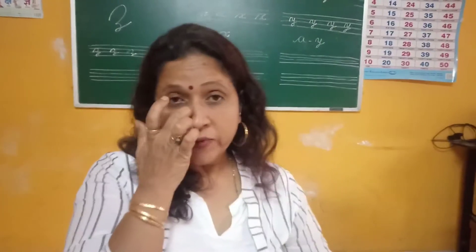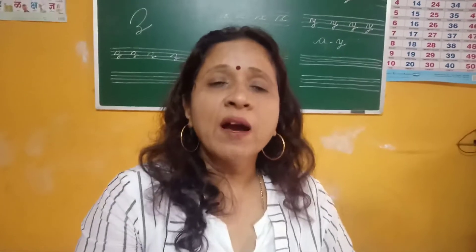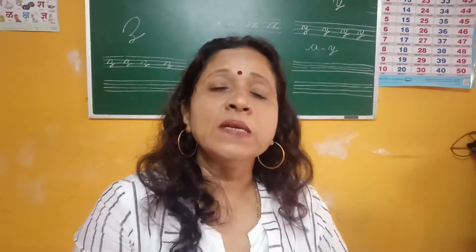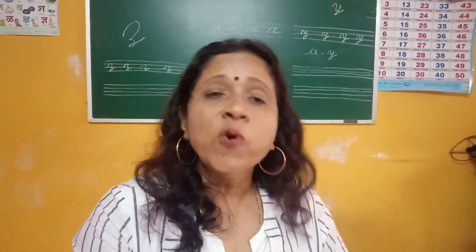Hello children. You know how to compare numbers — which one is bigger and which one is smaller. Now we have to write them in an ordering system, that is in ascending order and in descending order. In ascending order we write the numbers from smallest to biggest, and in descending order we write the numbers from biggest to smallest.